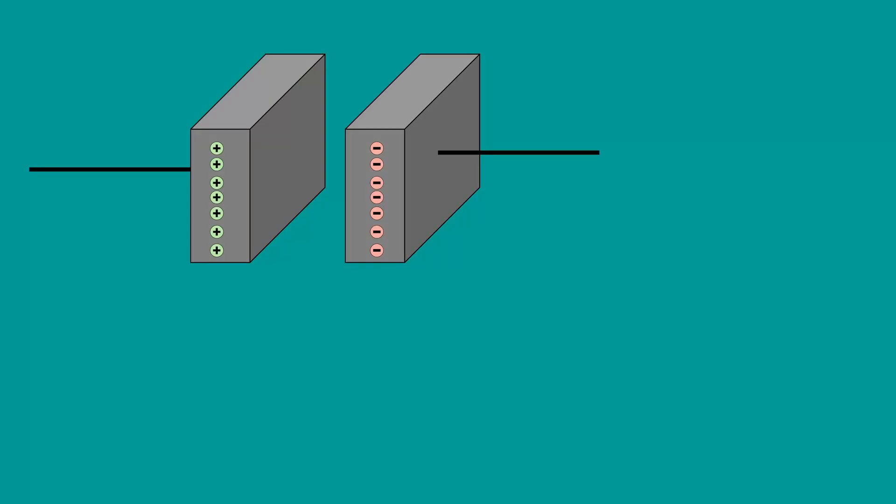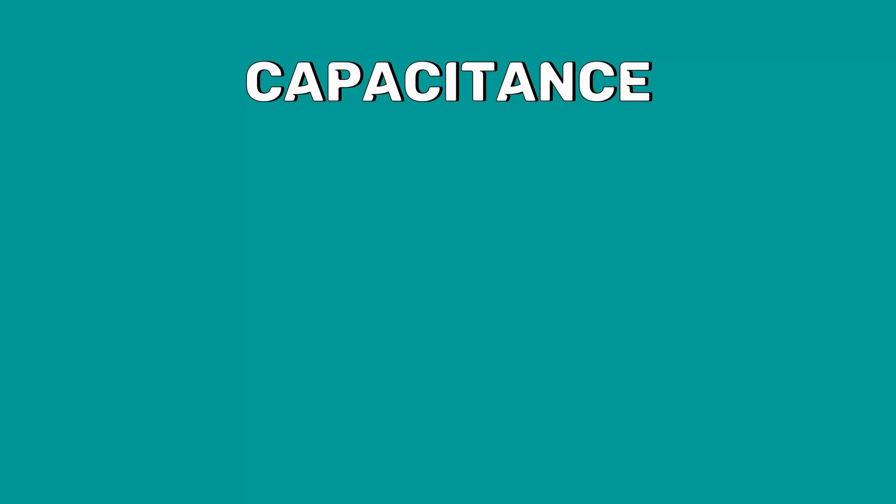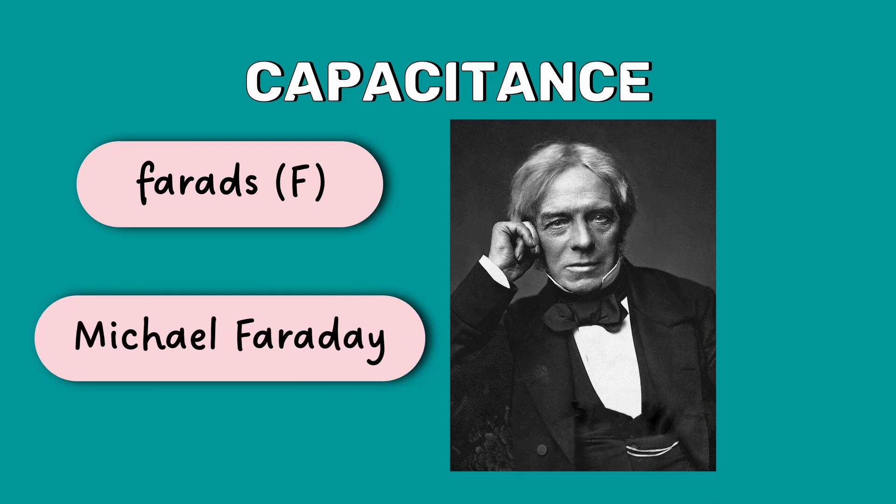Capacitance is expressed as a ratio of the electric charge on each conductor to the potential difference between them. Capacitance is measured in farads, named after an English physicist Michael Faraday.